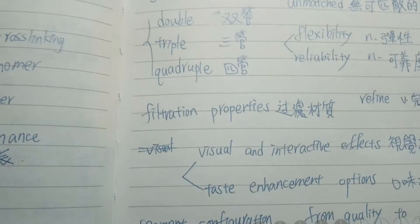Vocabulary 字汇: Multi-filter maker多滤嘴制造机, Forefront最前线, Retain保持, Cleaning maintenance清洁维护, Stand for标榜, Unmatched无可匹敌的, Double Triple Quadruple双管三管四管, Flexibility弹性, Reliability可靠度, Filtration properties过滤材质, Refine完善, Visual and Interactive Effects视觉及互动效果, Taste Enhancement Options口味提升选择, Segment Configuration切面结构, From Quality to Quality品质保证, Environmentally and Employee Friendly对环境以及员工友善, Noise Emission Rating噪音排放分级, Decibels分贝。